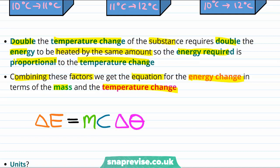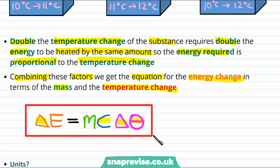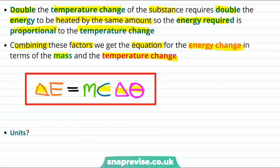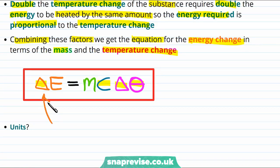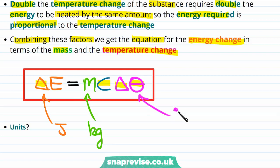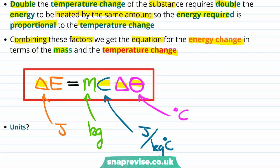We use the triangle symbol delta to mean 'change in', the letter C for specific heat capacity, and the Greek letter theta for temperature. Since this is an important equation, we draw a box around it. The energy change is measured in joules, mass in kilograms, temperature change in degrees centigrade, and specific heat capacity in joules per kilogram per degree centigrade.